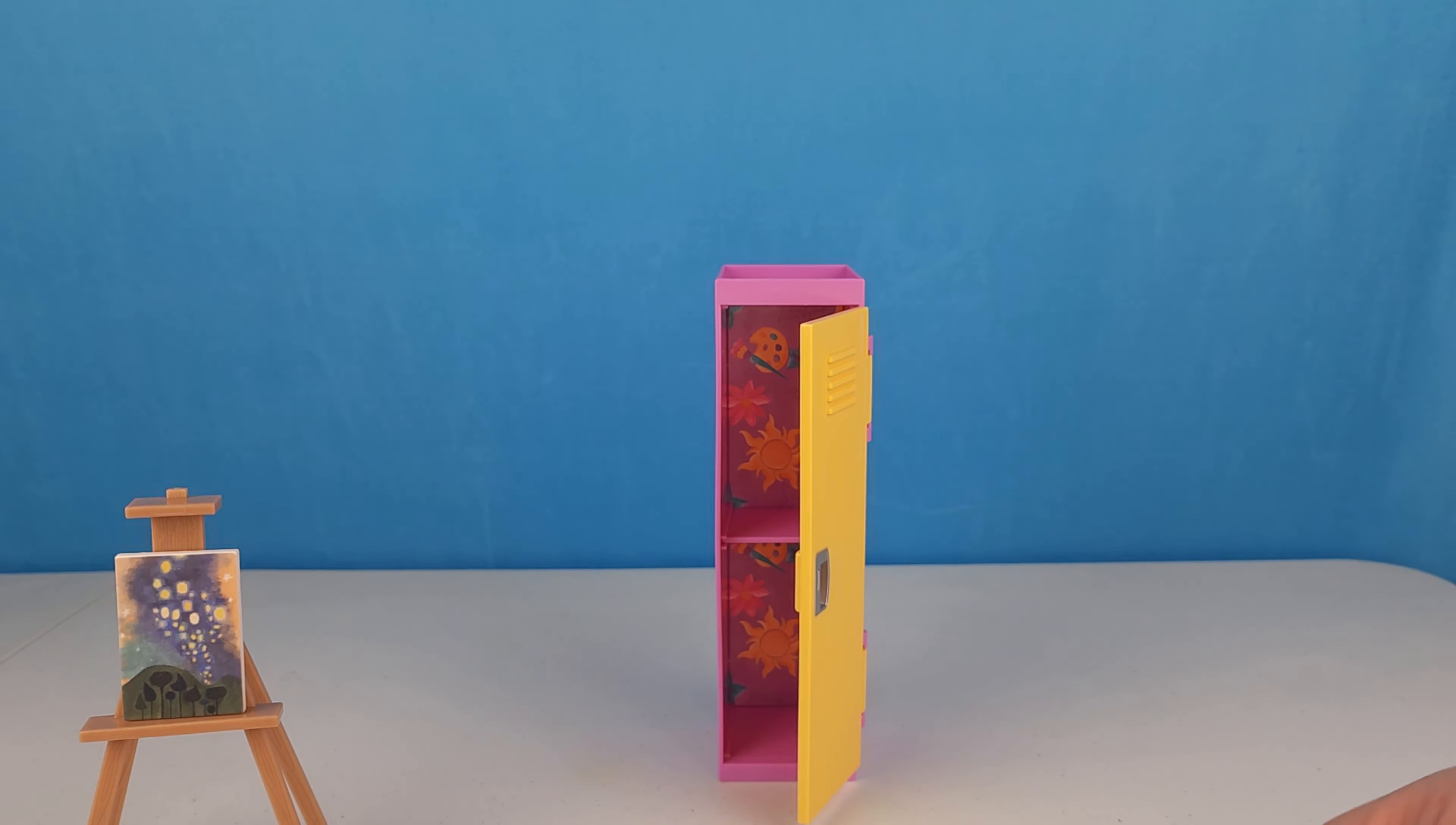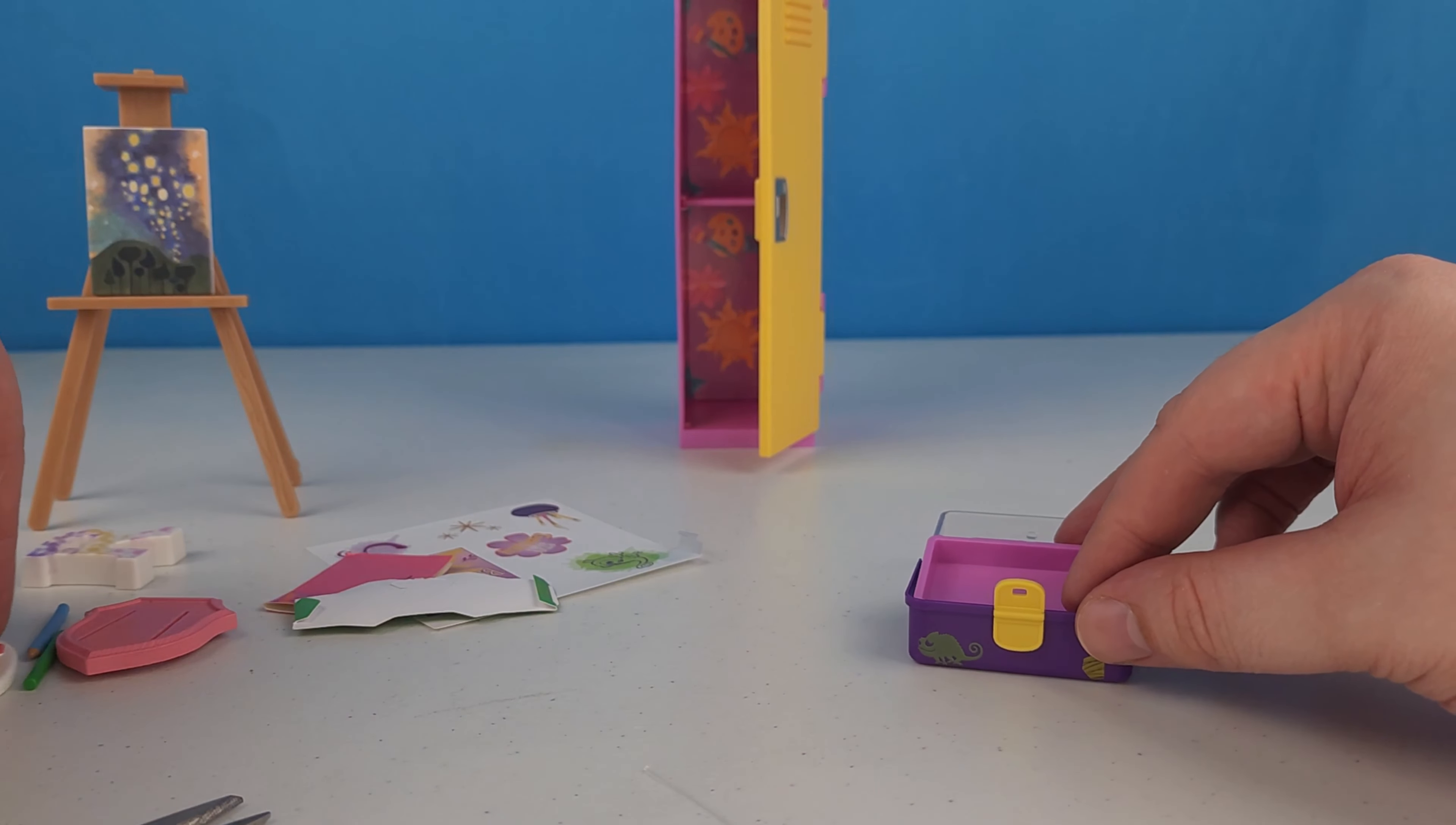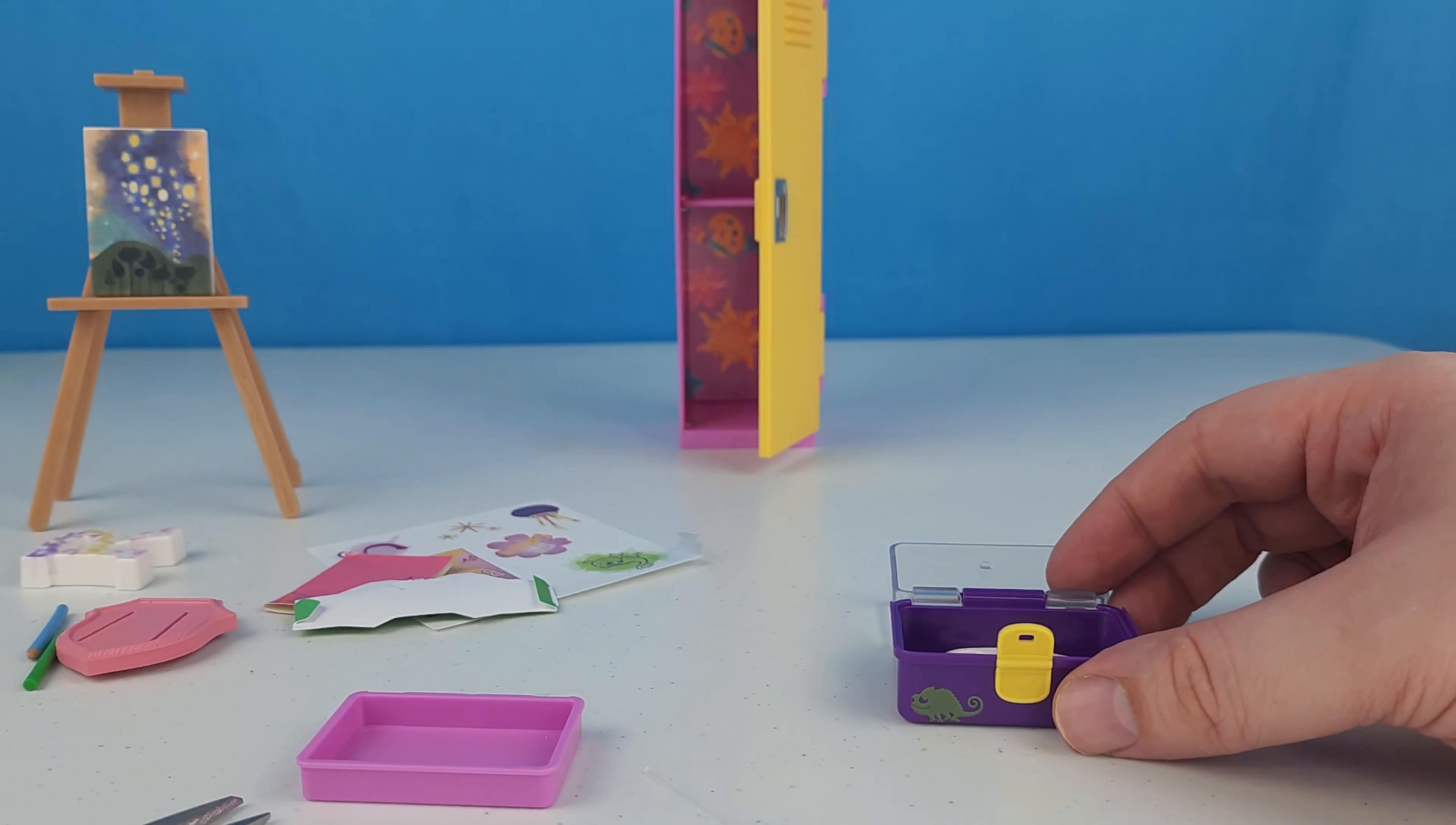And speaking of art supplies, let's go ahead and put some of this art supplies in this little bin and bring it down here just a little bit so you can see the table where we're working. So let's go ahead and take a look at some of the art supplies. So there is a palette and it's got green and pink and yellow and purple on it and that will fit right down in the bottom of the caboodle.